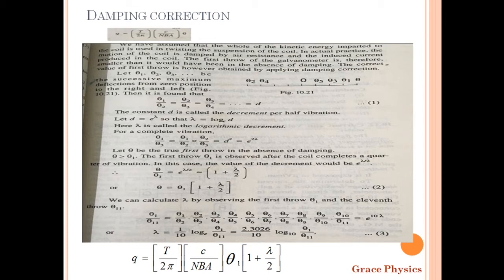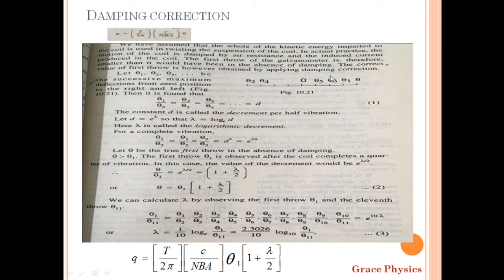These are our successive deflections. Theta1 is the first deflection on the right side. Theta2 is the deflection on the left side. The ratio theta1 by theta2, then theta2 by theta3, then theta3 by theta4, theta4 by theta5, and so on — the right-side deflection divided by the left-side deflection — must be a constant ratio. That is, theta1/theta2 = theta2/theta3 = theta3/theta4 = theta4/theta5, and so on.